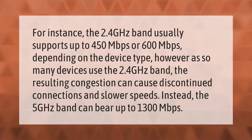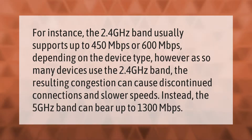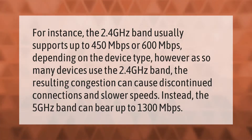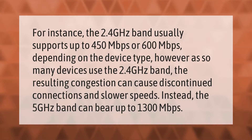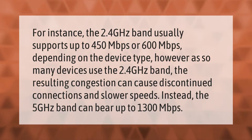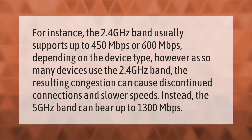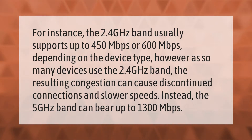The 2.4 gigahertz band usually supports up to 450 megabits per second or 600 megabits per second depending on the device type. However, as so many devices use the 2.4 gigahertz band, the resulting congestion can cause dropped connections and slower speeds. Instead, the 5 gigahertz band can bear up to 1,300 megabits per second.